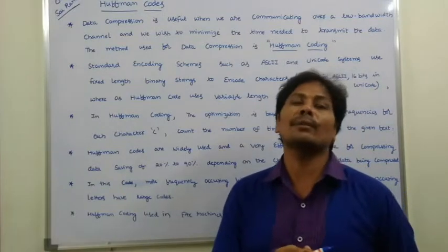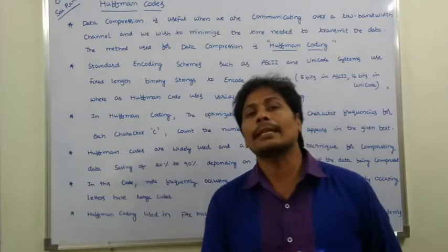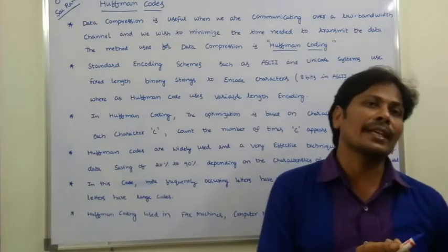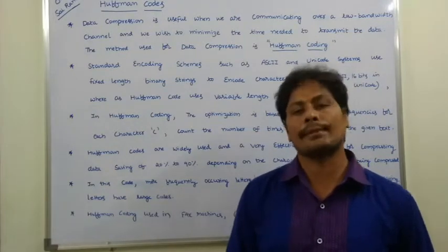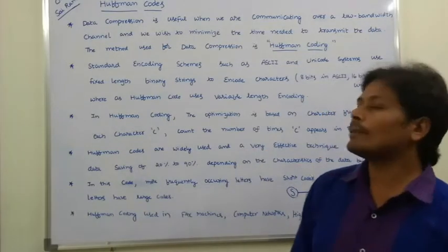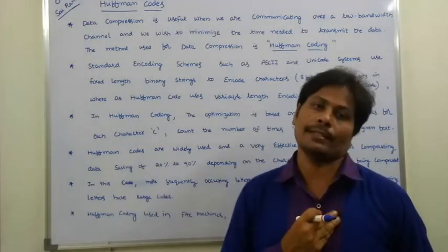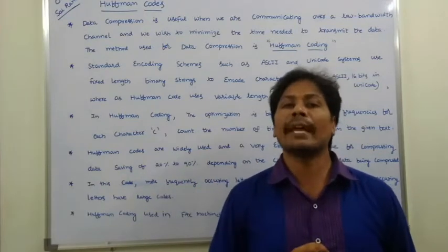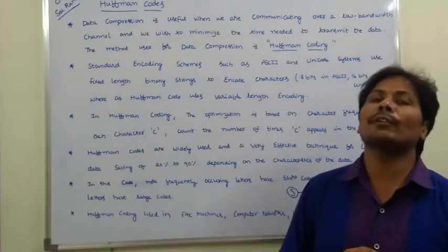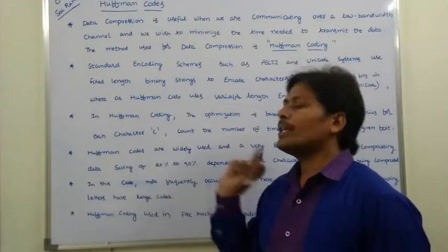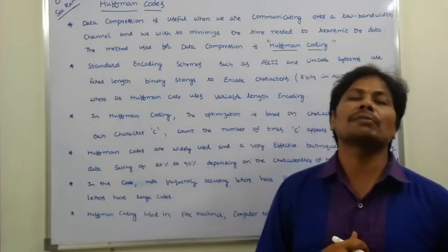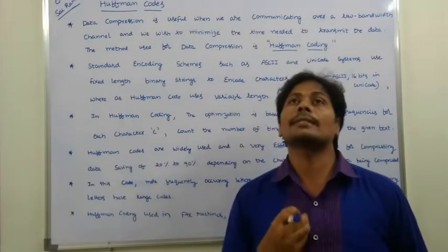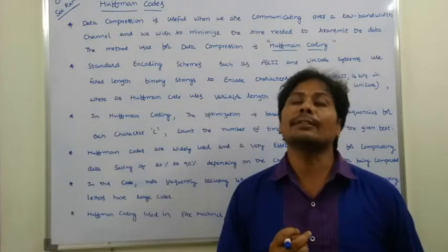Standard encoding schemes such as ASCII and Unicode use fixed-length encoding, but Huffman coding uses variable-length encoding. ASCII uses 8 bits and Unicode uses 16 bits. In Huffman coding, the optimization is based on character frequencies — how many times each character appears in the given text or data. By using Huffman coding, data saving is 20% to 90% because it is a data compression technique.